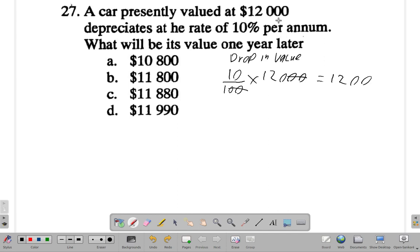Which is the same as one-tenth, as I said before, of 12,000. So $1,200 drops off the car. What's the value now? $12,000 minus $1,200.